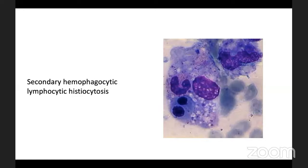Another phenomenon commonly seen in COVID-19 is secondary hemophagocytic lymphohistiocytosis (HLH), caused by cytokine release activating macrophages. These activated macrophages devour blood cells — including RBCs, white cells, and platelets — resulting in high ferritin and high LDH levels. This is likely why corticosteroids have been found effective in reducing mortality in COVID-19: they may inhibit this secondary HLH phenomenon.